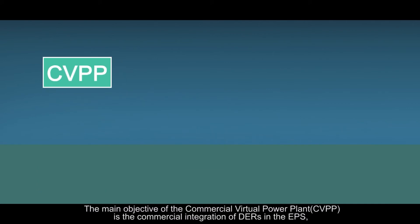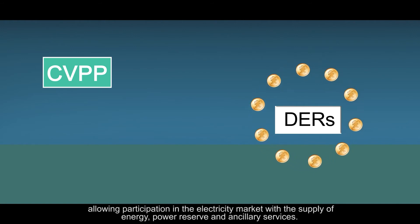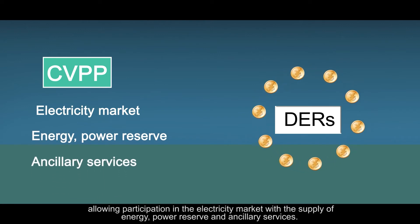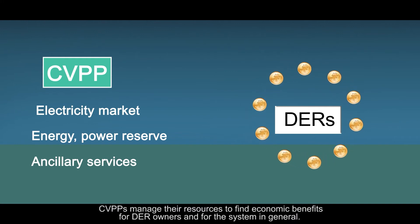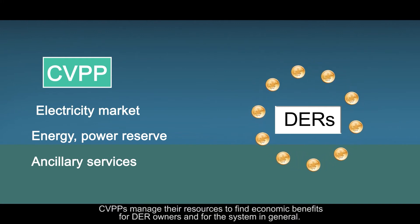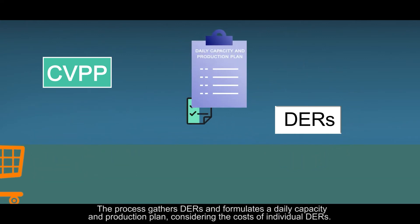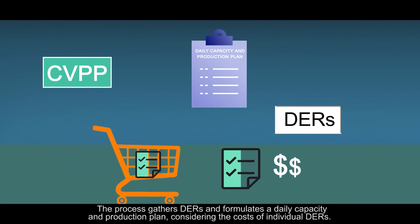The main objective of the commercial virtual power plant is the commercial integration of distributed energy resources in the electrical power system, allowing participation in the electricity market with the supply of energy, power reserve and ancillary services. Commercial virtual power plants manage their resources to find economic benefits for distributed energy resources owners and for the system in general. The process gathers distributed energy resources and formulates a daily capacity and production plan, considering the costs of individual distributed energy resources.